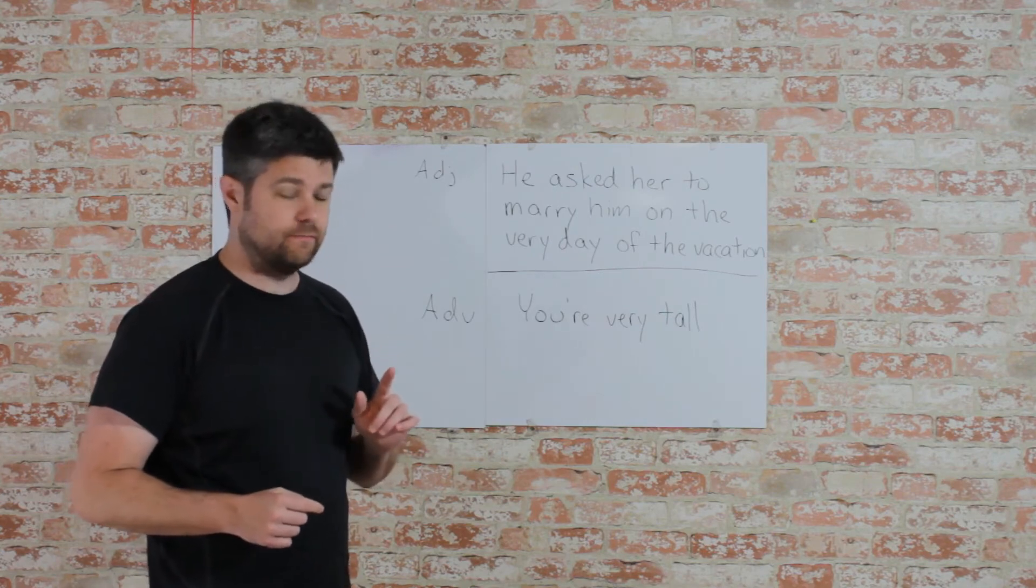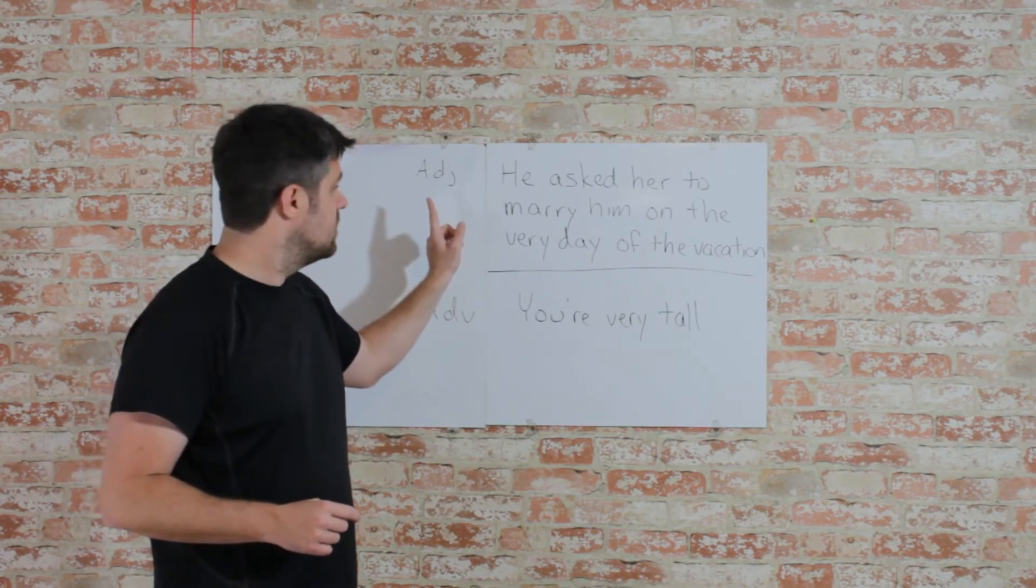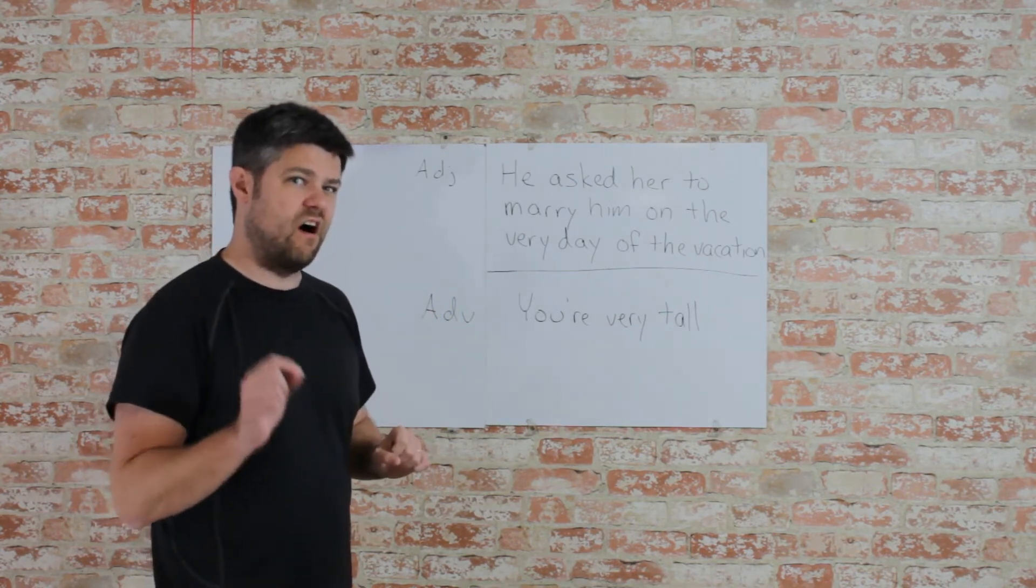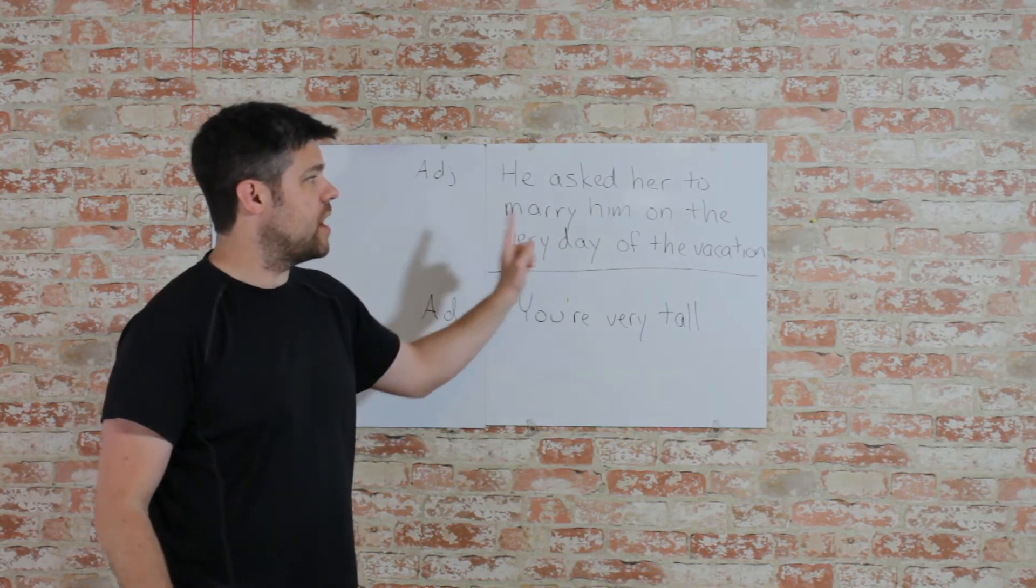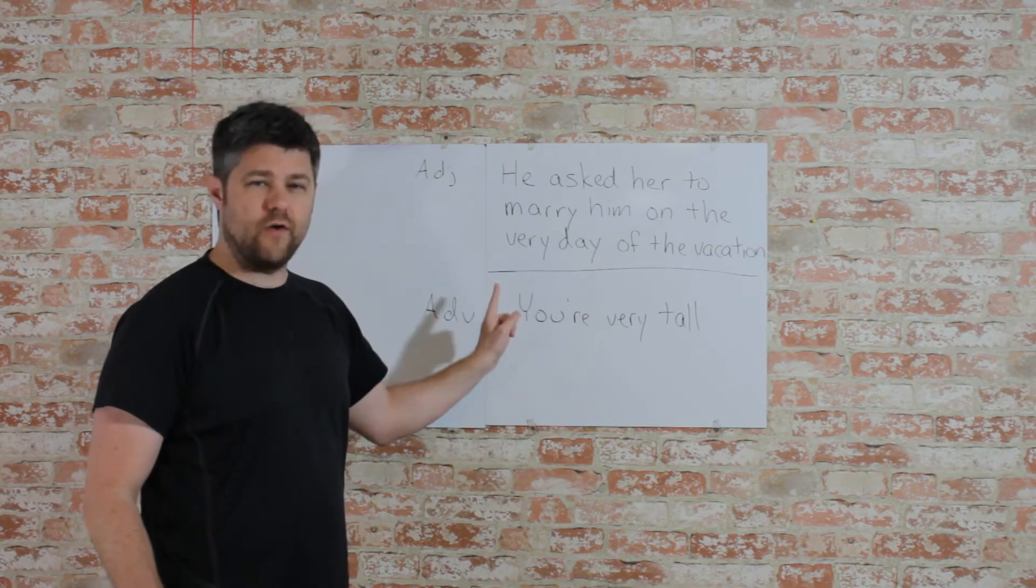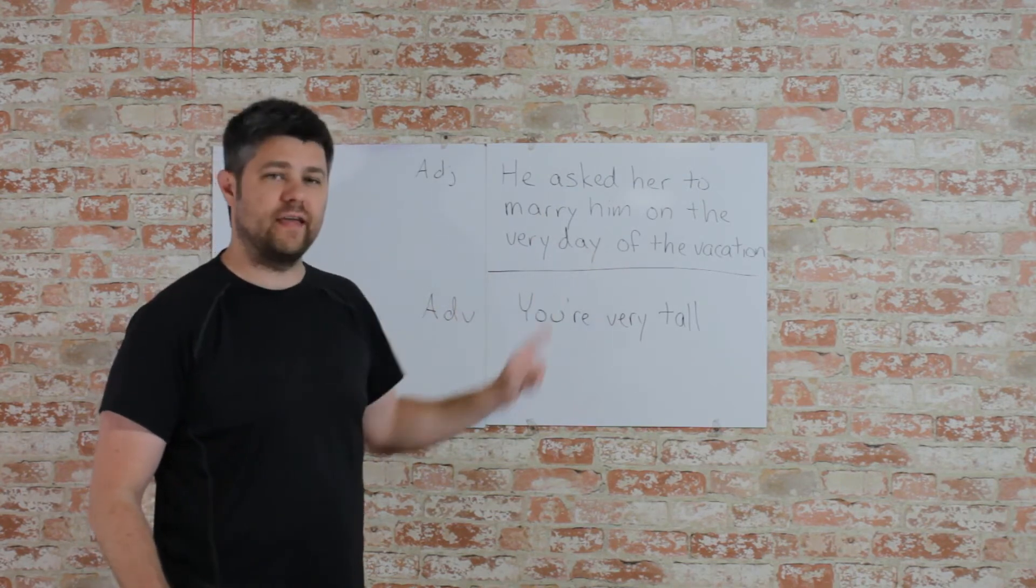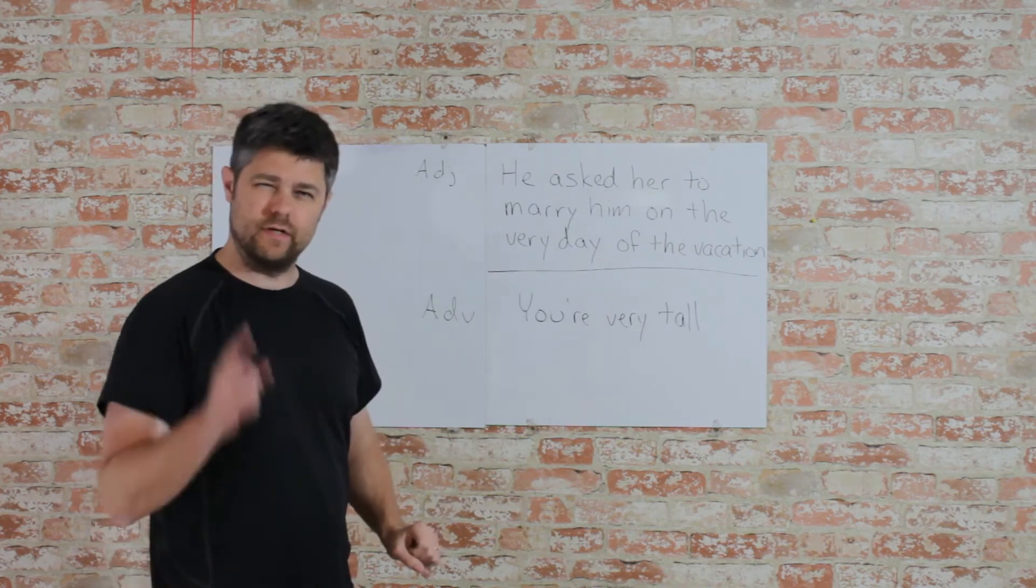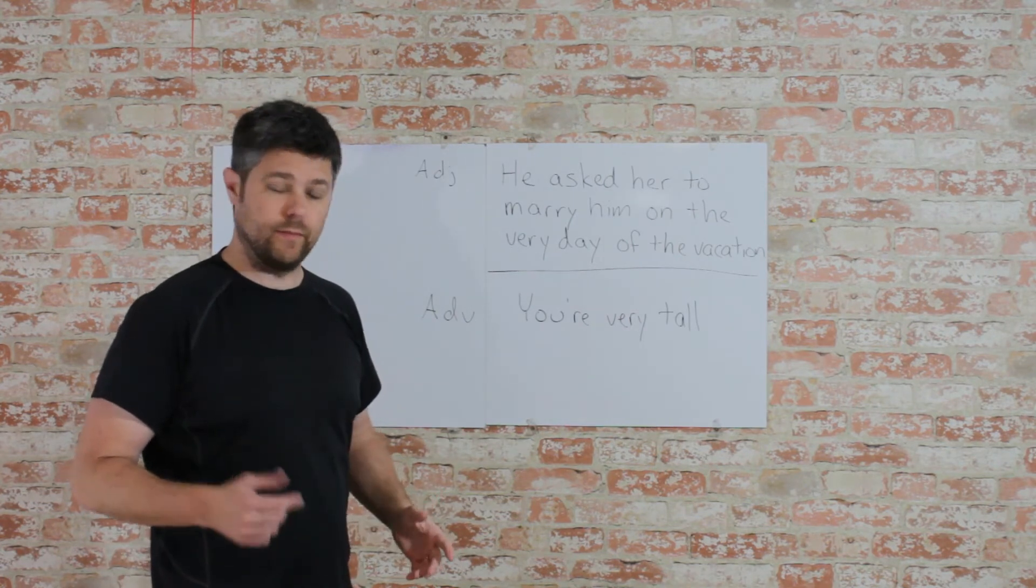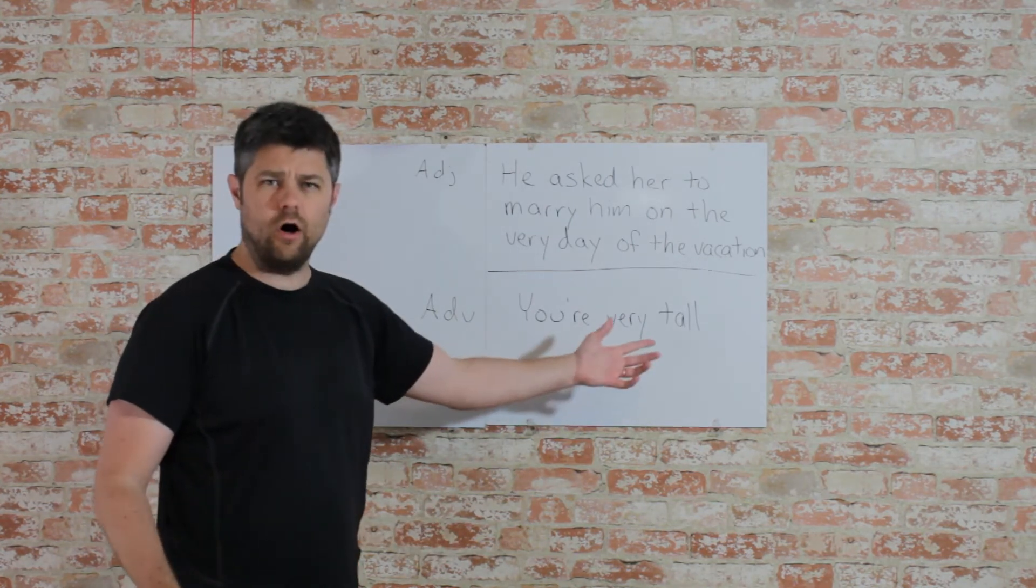Now, let's see him in action. First, the adjective version of very. He asked her to marry him on the very day of the vacation. It acts as an adjective. Let's see the adverb. You're very tall.